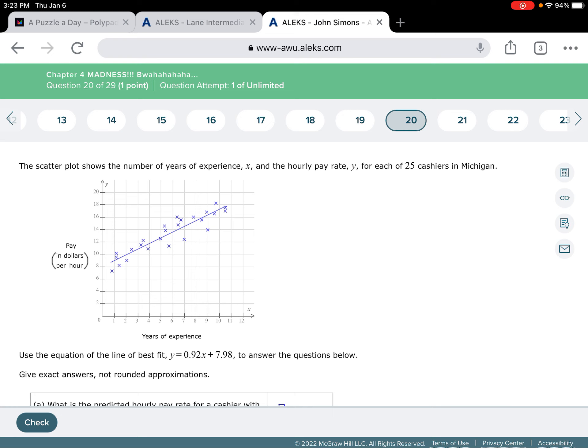So what this says is the scatter plot shows the number of years of experience X, that's your independent variable, and the hourly pay rate Y, which is your dependent, for each of 25 cashiers in Michigan. So that's somebody who works at a cash register and tallies up things and then takes money from people. We can see on the bottom it says years of experience. That's your X. It goes from 0 to 12. And on top it says pay in dollars per hour. It goes from 0 to 20.